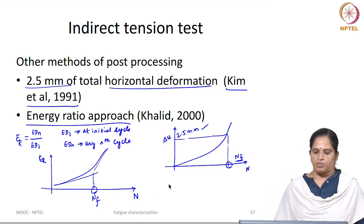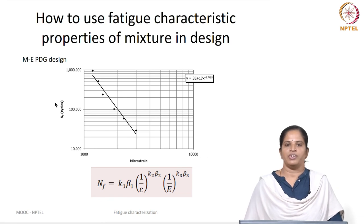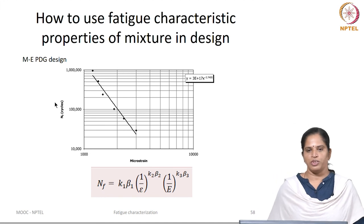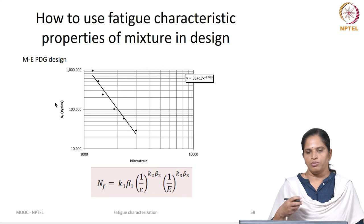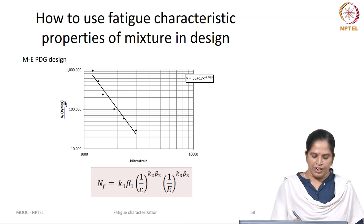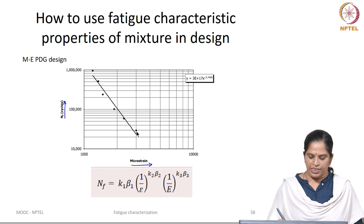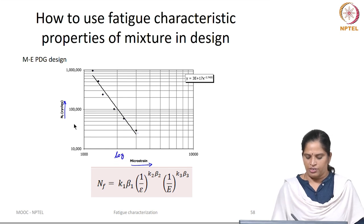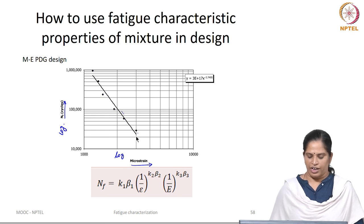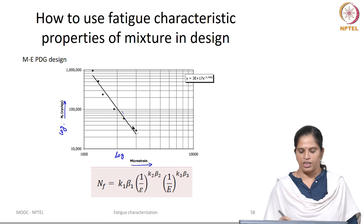There are at least three approaches for post-processing of indirect tension test data. We have seen how to simulate the fatigue damage in a laboratory and calculate the number of cycles corresponding to damage of a bituminous mixture. Now we will see how to use these fatigue damage values in design — one example is the MEPDG design. We have a number of cycles obtained in the laboratory at different strain levels, and in the logarithmic scale you will have a straight line.